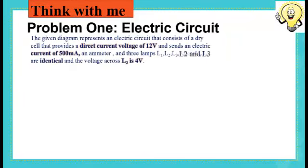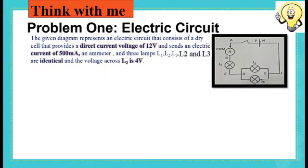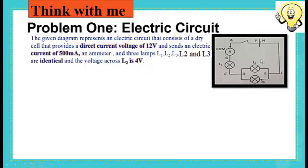The given diagram represents an electric circuit that consists of a dry cell that provides a direct current voltage — DC voltage — of 12 volts, and sends an electric current of 500 mA, an ammeter, and three lamps L1, L2, and L3, where lamps L2 and L3 are identical, and the voltage across L2 is 4 volts.